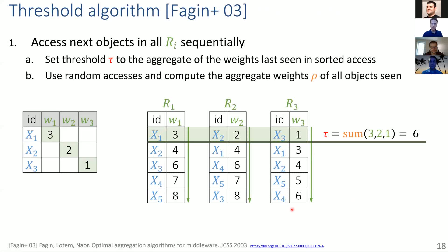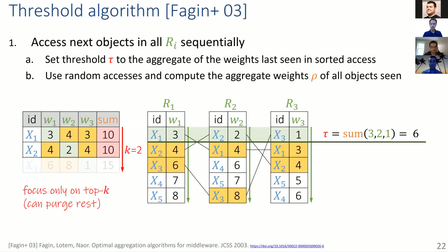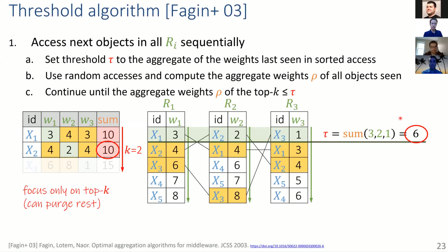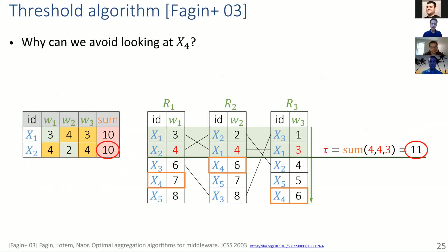We have seen objects 1, 2, and 3, but only part of their values, so we use random accesses with possibly different costs to fill in the missing values. Once we have them, we build the aggregates, rank them, and keep the top K — here 2. The key stopping criterion: we repeat this until the aggregate weights of all the top K objects are smaller than the threshold. In this case that's not yet true — 10 is still bigger than 6 — so we continue. After another access, the sum of the last-seen values is 11. Now 10 is smaller than 11, so we can stop.